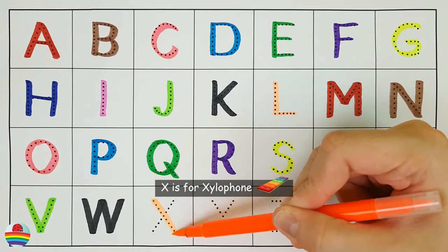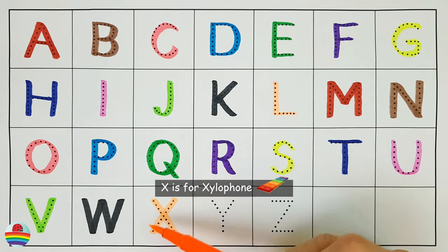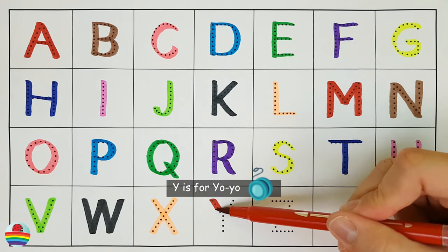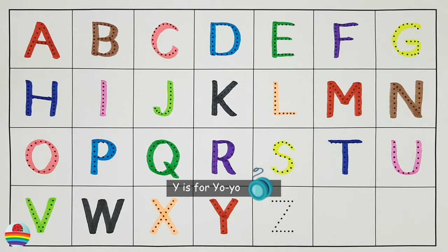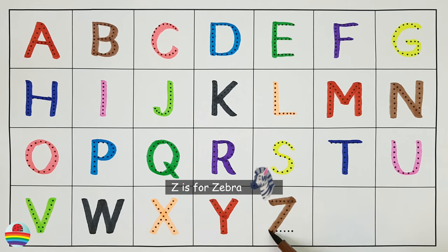X. X is for Xylophone. X. Y. Y is for Yo-yo. Y. Z. Z is for Zebra. Z.